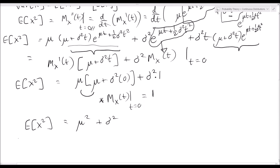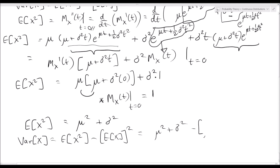Now we can find the variance. The variance of X equals E[X²] minus (E[X])², which is μ² plus σ² minus μ², which equals σ². And that is the variance of the normal distribution.